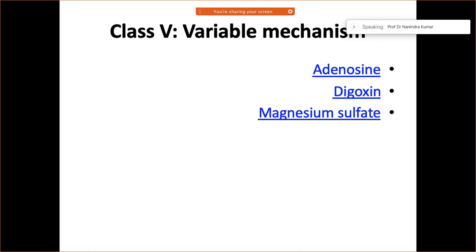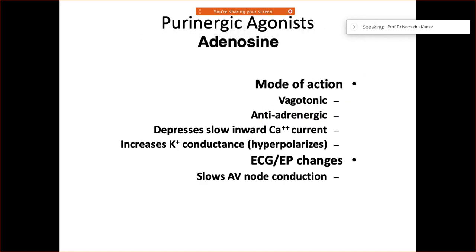Class 5 antiarrhythmic medications include several drugs such as adenosine, digoxin, and magnesium sulfate. Adenosine is well known as a vagotonic agent and also has anti-adrenergic properties.